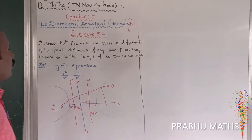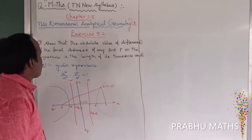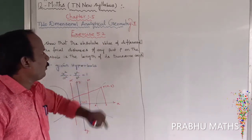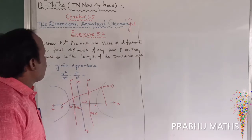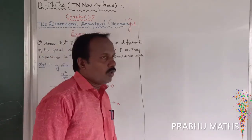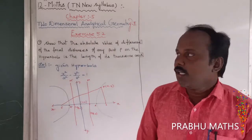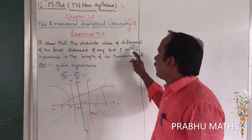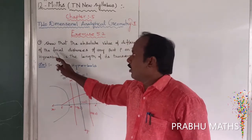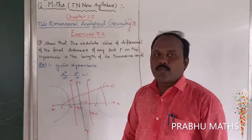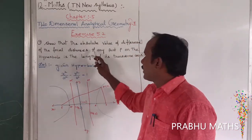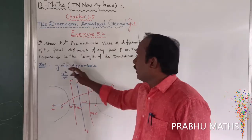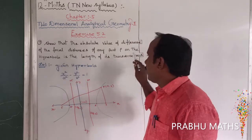Show that the absolute value of the difference of the focal distances of any point P on the hyperbola is the length of the transverse axis. The first point shows that the absolute value of the difference of the focal distances of any point P on the hyperbola is the length of the transverse axis.